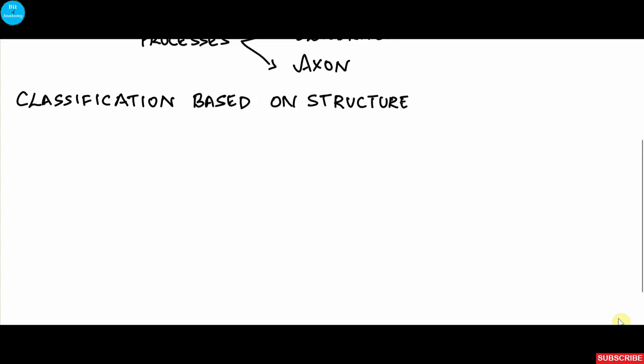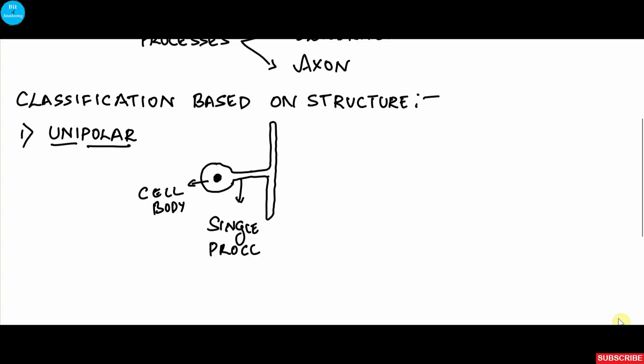It is classified mainly based on the number of dendrites or poles present in the neuron. One type is unipolar which contains a single pole where one process arises and divides into a dendrite and an axon. Examples include the dorsal root ganglion or sensory ganglion.